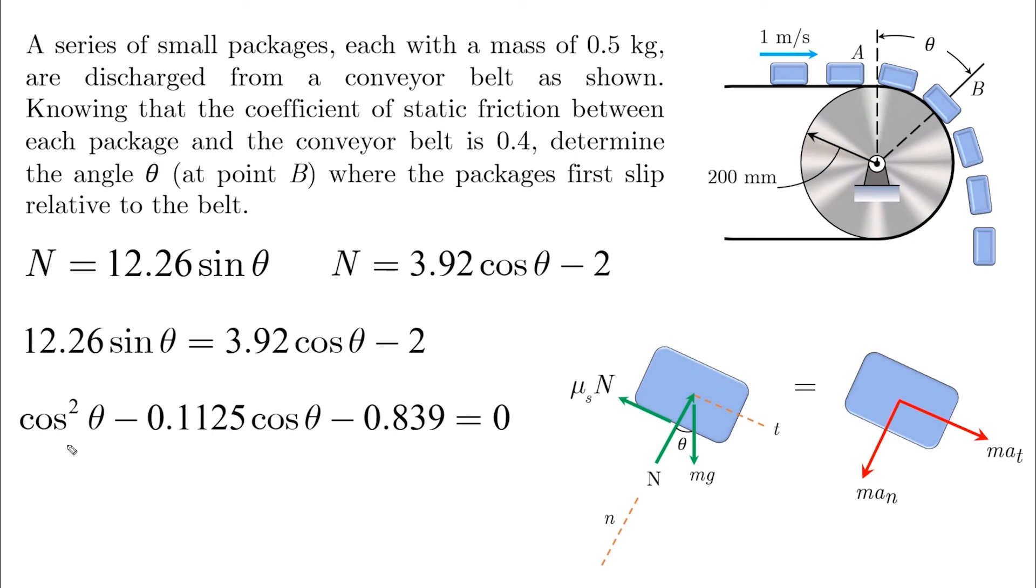So you just need to substitute cos θ as like x, for example, and then solve this equation: x² minus 0.1125x minus 0.839 equals 0. And if you do that, you will find that x or cos θ will be equal to 0.974, and this leads to θ is equal to 13.09 degrees.